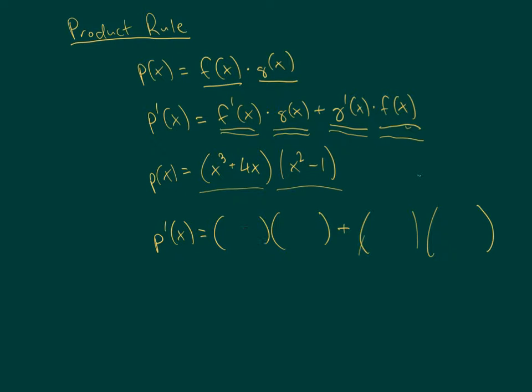f prime will go here, that's the derivative of this first part. f of x is that, so the derivative of f goes there. Then g of x is the second part, and that's just going to go in there as g of x. Then g prime of x is the derivative of that, and that's going to go there. And then f of x is the first part, so f of x is going to be just dropped in there.